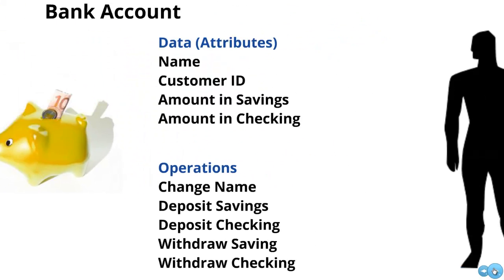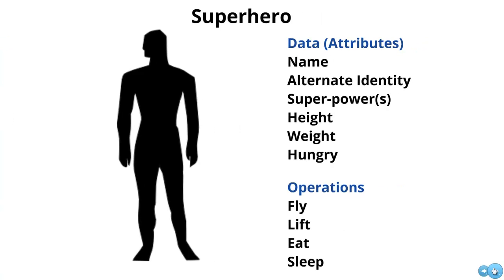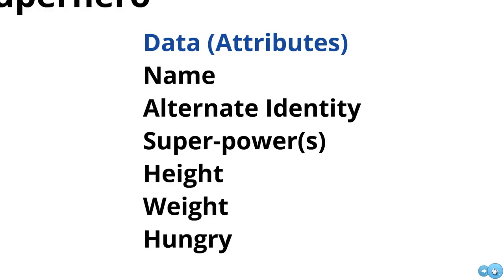Let's look at one more example: the idea of superheroes. We can model a superhero in terms of its data and its operations. For data, we can think of the name — Batman, Superman, Spiderman, Hulk, Green Lantern, Iron Man. Alternate identity: Bruce Wayne, Clark Kent, Bruce Banner. Superpowers they may have — can they fly, do they have superhuman strength? Their height, their weight. Maybe something more mundane, like are they hungry or not. All this is what we could know about a particular superhero.